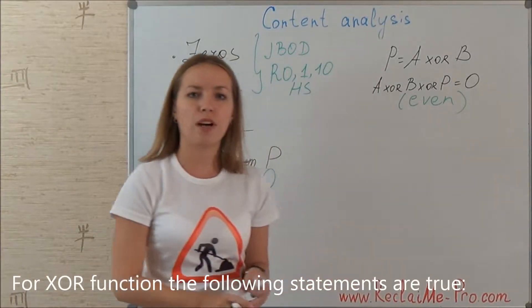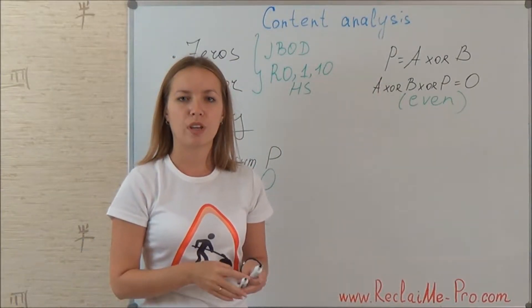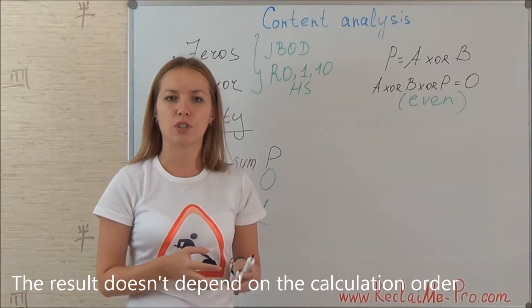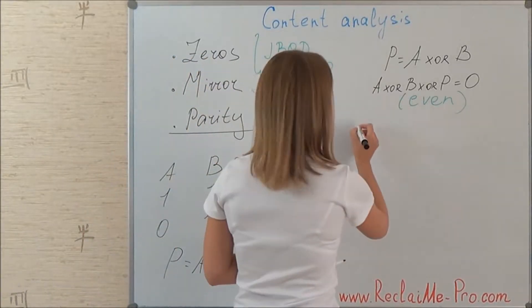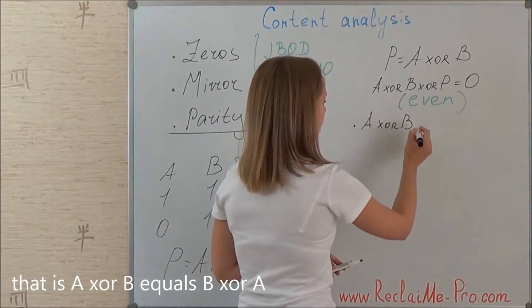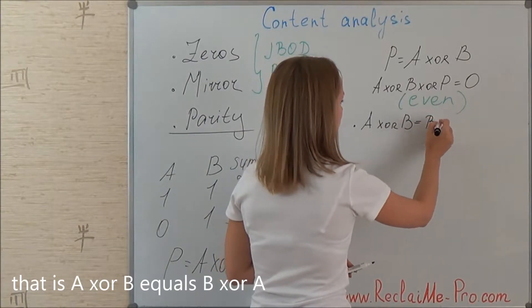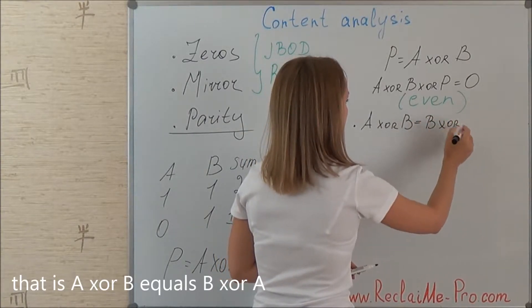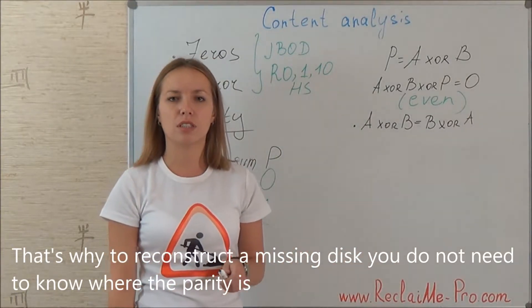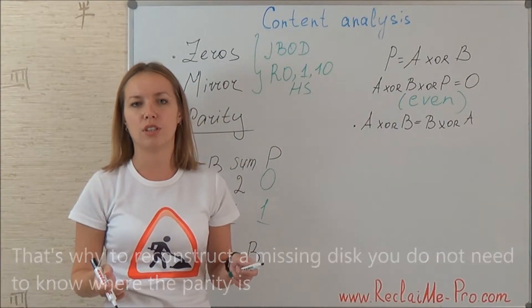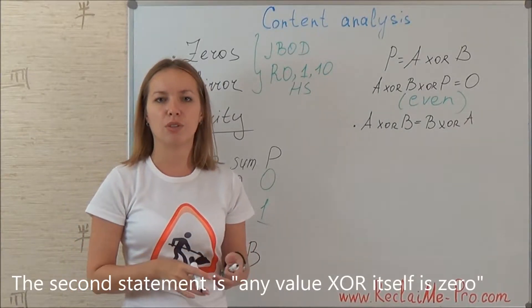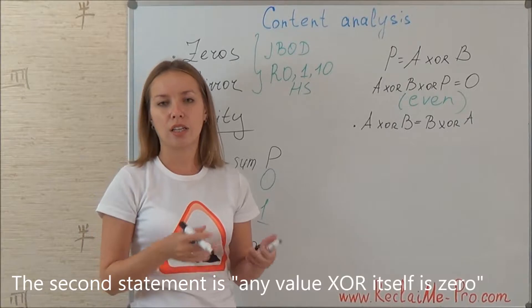For the XOR function the following statements are true. First, the result does not depend on the calculation order — that is, A XOR B equals B XOR A. That is why, to reconstruct a missing disk, you do not need to know where the parity is. The second statement is: any value XOR itself is zero.